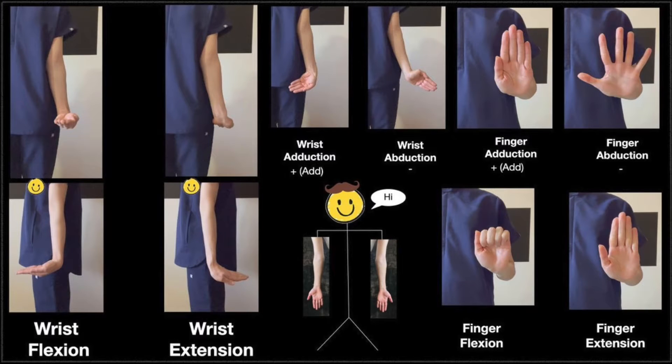Hello everyone, it's Schematic Mad and today we're going to talk about anatomical position, wrist, finger and thumb joint movements.